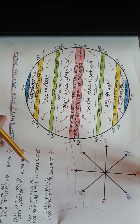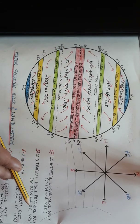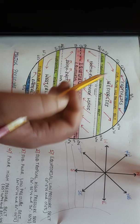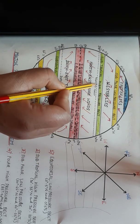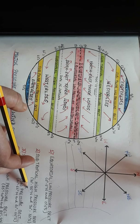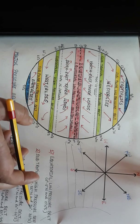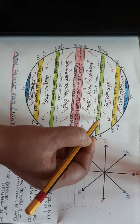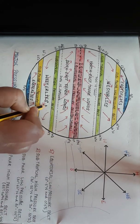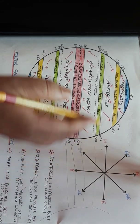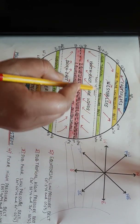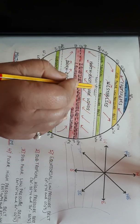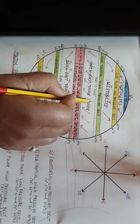Number two — we have the subtropical high pressure belt. The location of this belt is 30 to 35 degrees north and 30 to 35 degrees south. See here — this part of the earth experiences a subtropical high pressure belt, meaning a permanent high pressure belt.